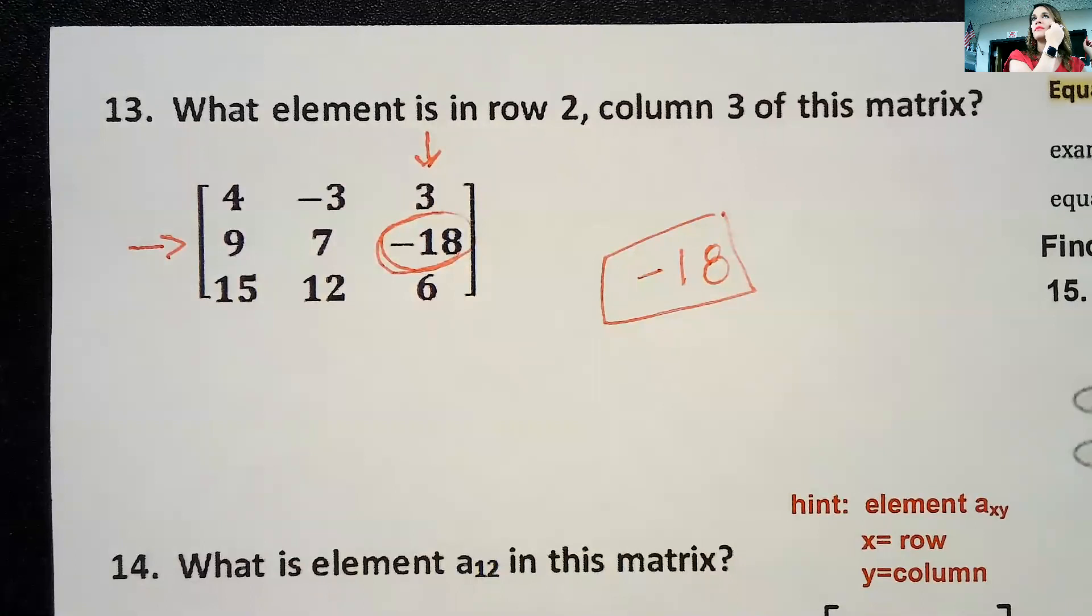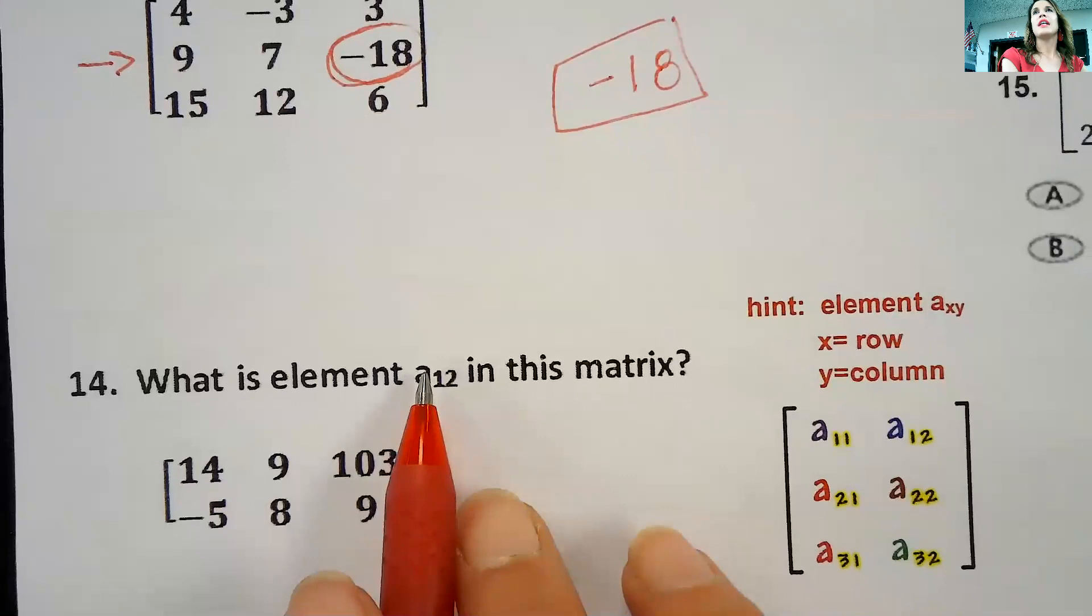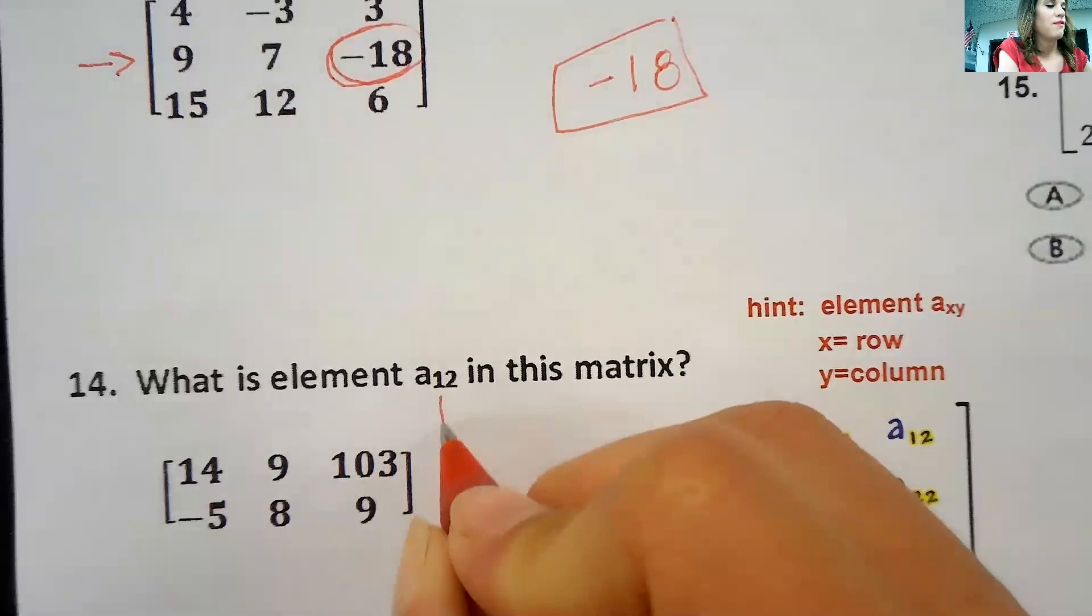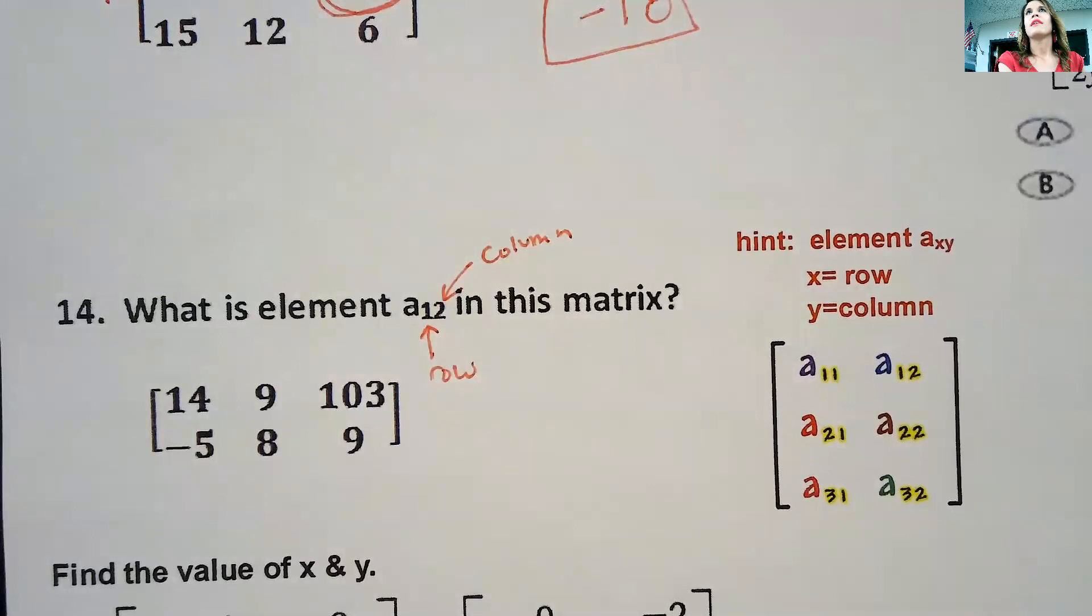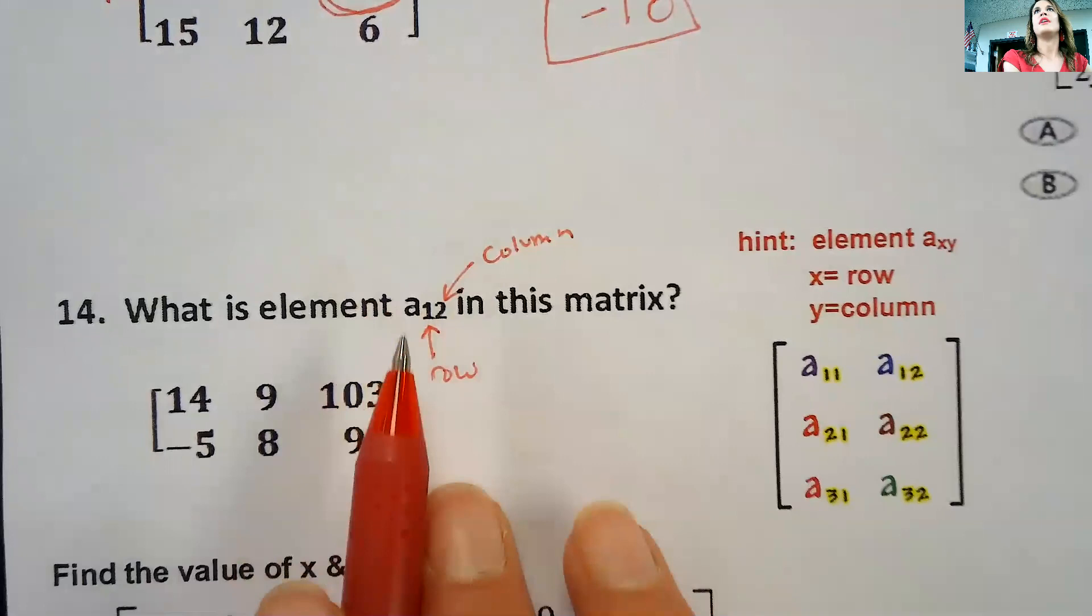Another way that they might write it is like this, where it says a₁₂. That's just saying the first row and the second column. So be familiar with that notation. The first one is going to be the row, the second one is the column.